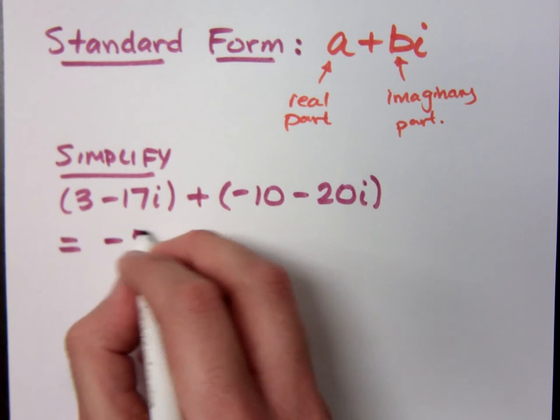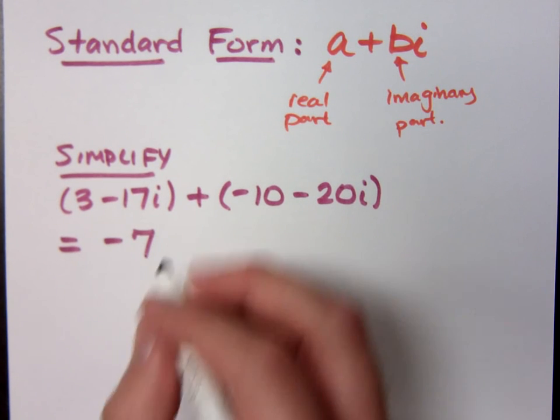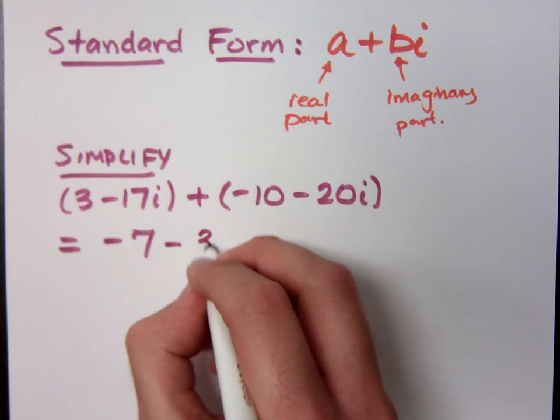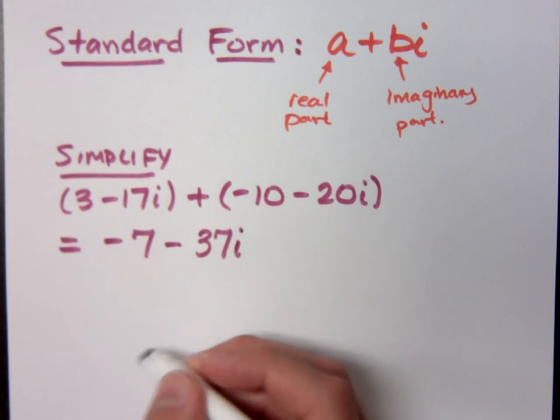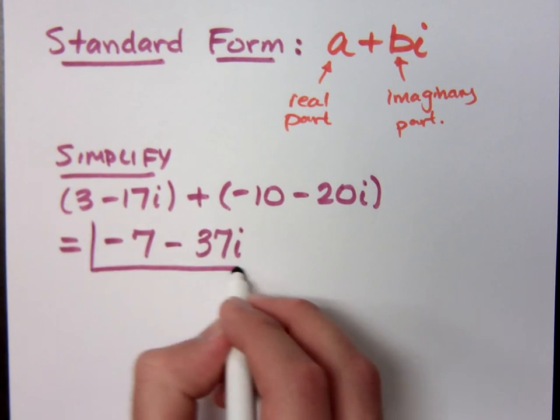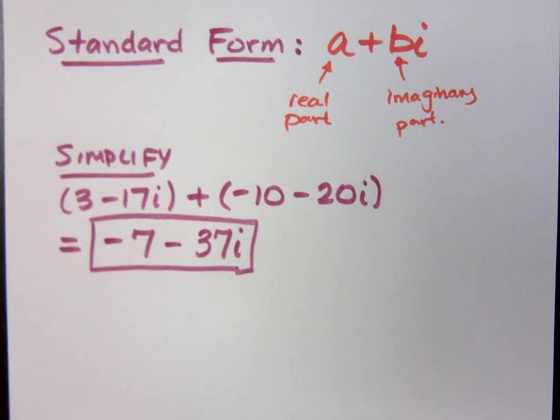The real part is negative 7. How about your imaginary part? Minus 37i. Box it. You're done. There's nothing else to do here. You're really just combining like terms. That's it. Pretend that the i was x, and you've got that.